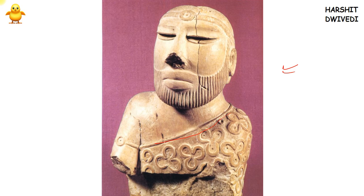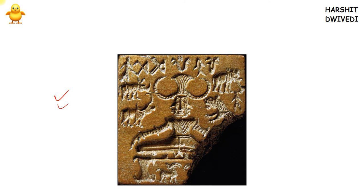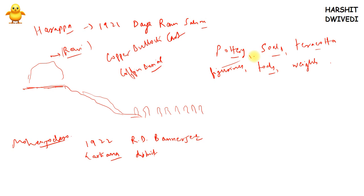Many other terracotta figurines, seals, pottery, tools, and weights have also been found from Mohenjo-daro — the general findings common to most Indus Valley civilization sites.